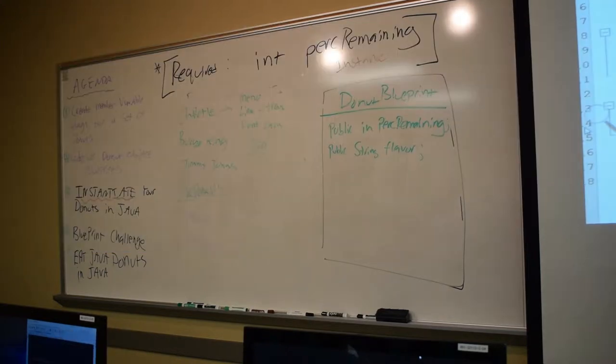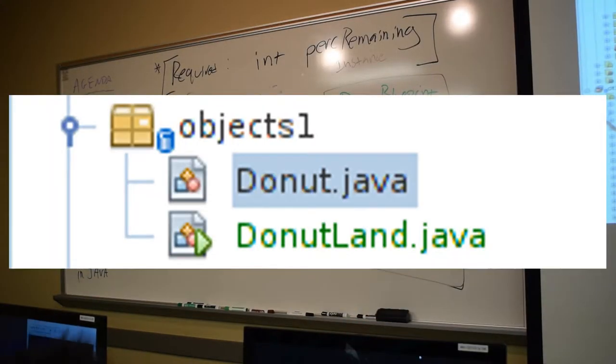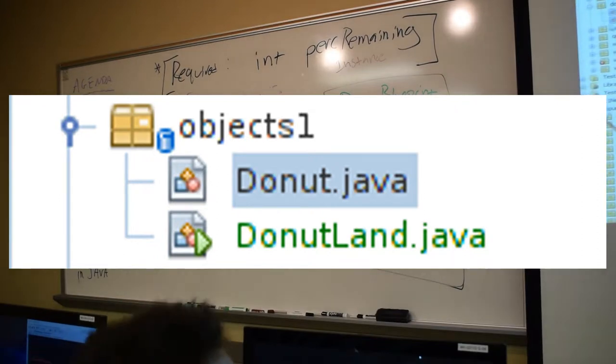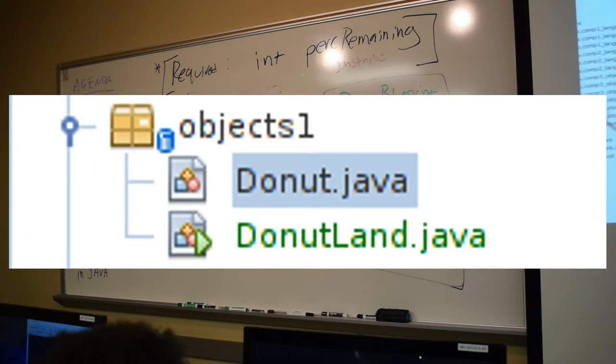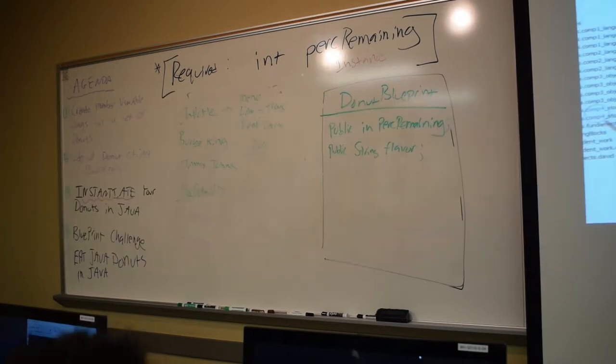So what's important is that these classes are in the same package because the Java Precompiler, when we ask it to make an object, it will say, well, they want an instance of this object. I need a blueprint to make it. The default place that it will look for that blueprint is in its own package. So we're going to ask the compiler, when it starts running our program, to make us a donut object.